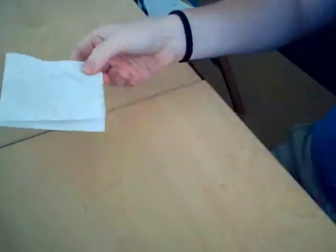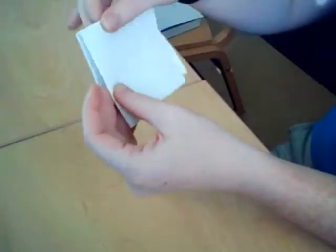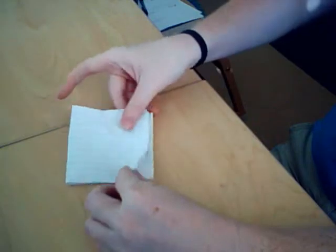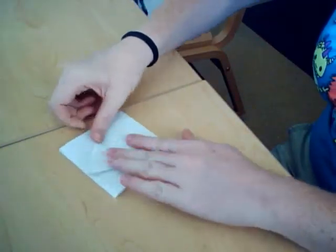So now you have a smaller square. Now, with the center of the paper at top, you take each corner and you fold it into the center of the square.